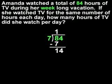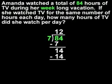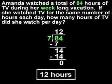7 divides into 14 two times, so we put a 2 above the 4. 2 times 7 is 14, so we put 14 under 14 and subtract to get 0. So the quotient of 7 divided into 84 is 12. Amanda watched 12 hours of TV per day during her vacation.